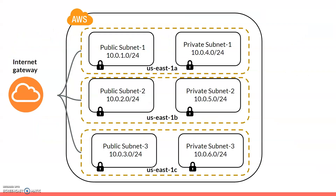Before we launch the VPC, we need to understand the resources we are going to use in this session. The main square bracket in the diagram completely represents the VPC, which provides isolation of your network. When you create a VPC, you have to give it a CIDR block — a range of IP addresses. Here we will use the 10.0.0.0/16 network for the VPC.